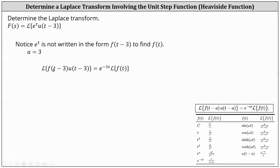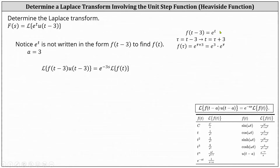We do know f of the quantity t minus three must equal e to the t, but to determine f of t, we'll perform a change of variables. We begin with f of the quantity t minus three equals e to the t, and now we introduce a new variable, tau. Tau is equal to t minus three, and therefore t equals tau plus three.